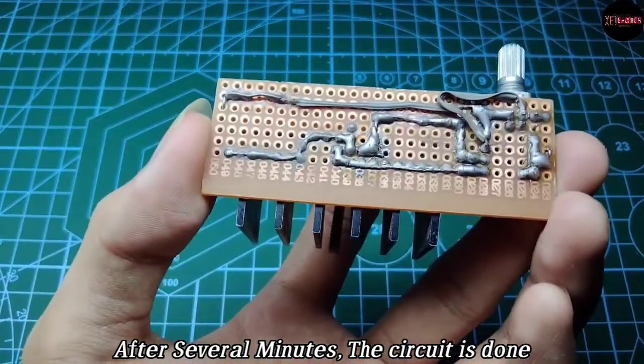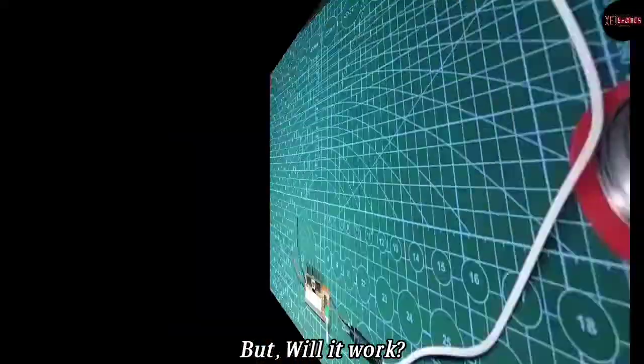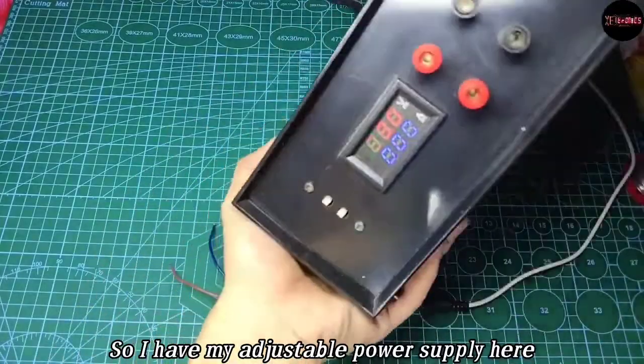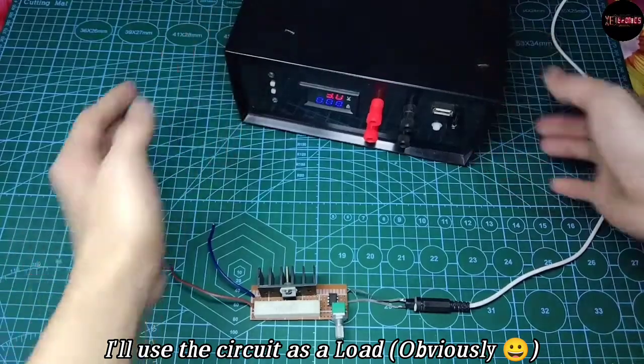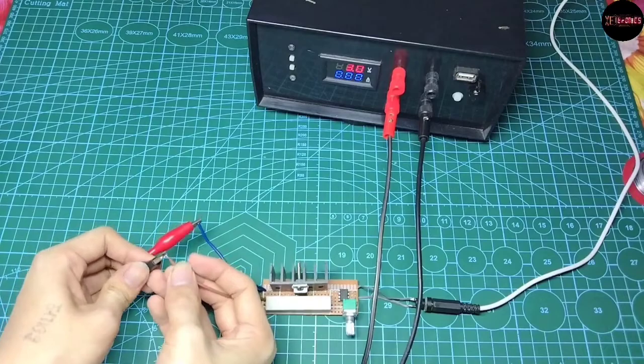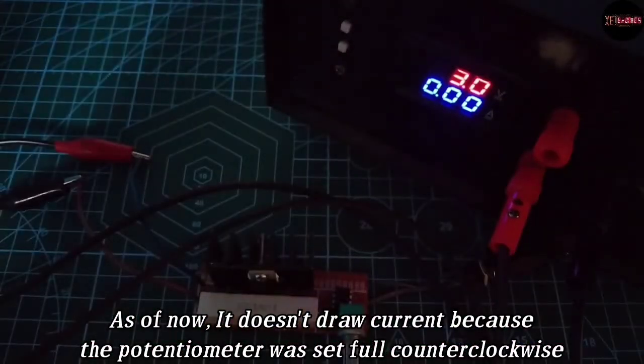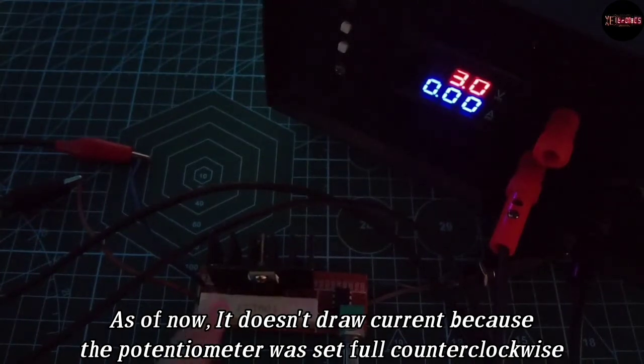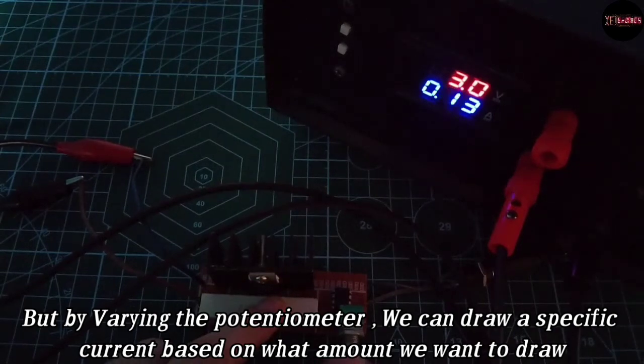After several minutes the circuit is done, but will it work? I have my adjustable supply here and I'll use the circuit as a load obviously. As of now it doesn't draw that much current because of the potentiometer value, but by varying the potentiometer we can draw a specific current based on what we want to draw.